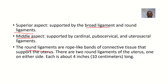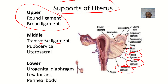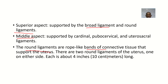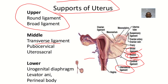The round ligaments are rope-like bands of connective tissue that support the uterus. There are two round ligaments, one on either side, and each is about four inches long, or 10 centimeters. You can see the round ligament here, and if the specimen were not dissected you would see another one on the other side too. So the major supports of the uterus are: the round ligament, broad ligament, transverse (cardinal) ligament, pubocervical ligament, and uterosacral ligament.